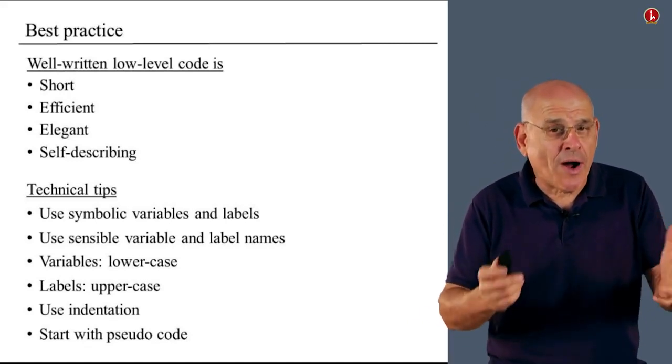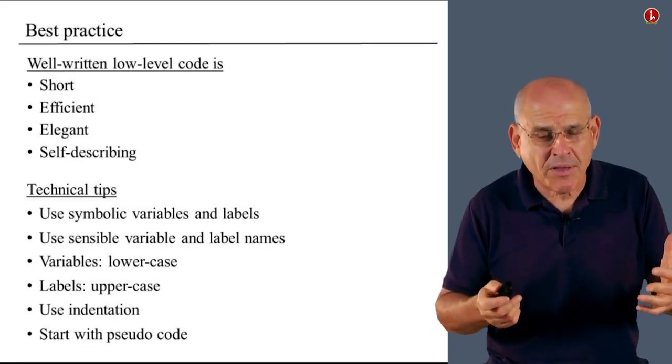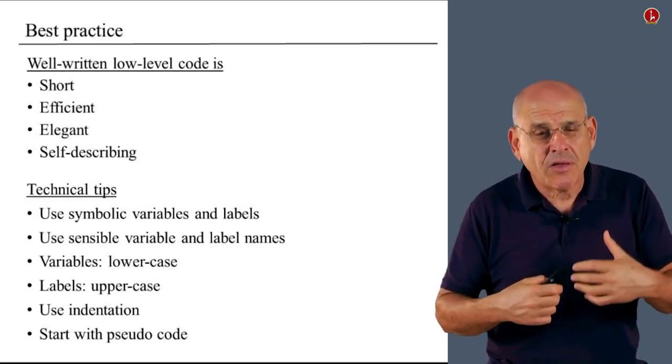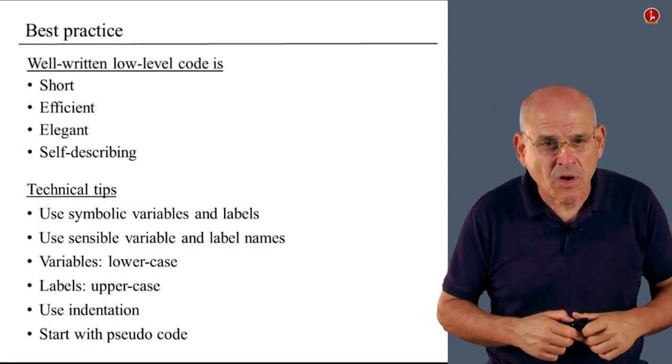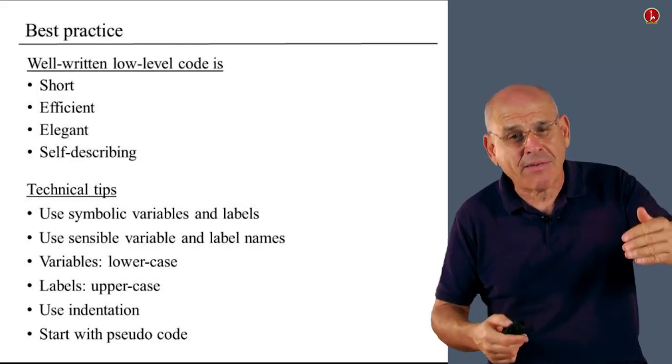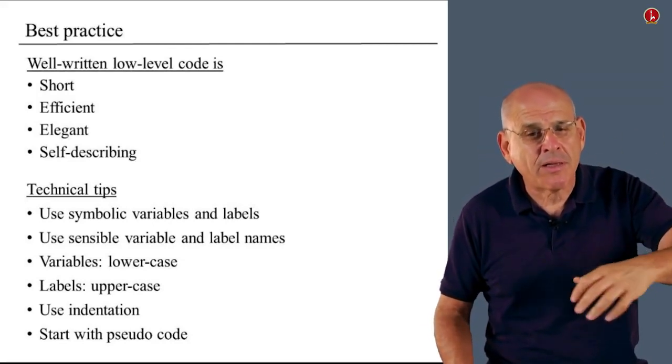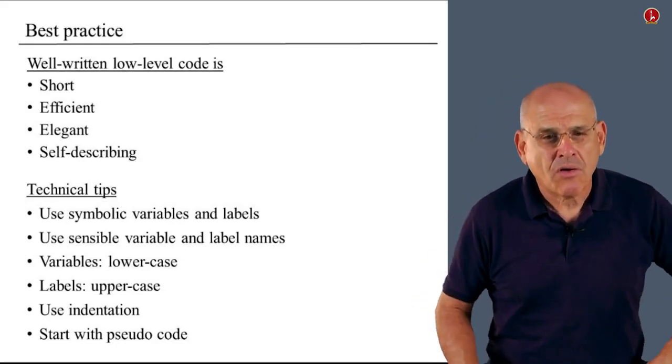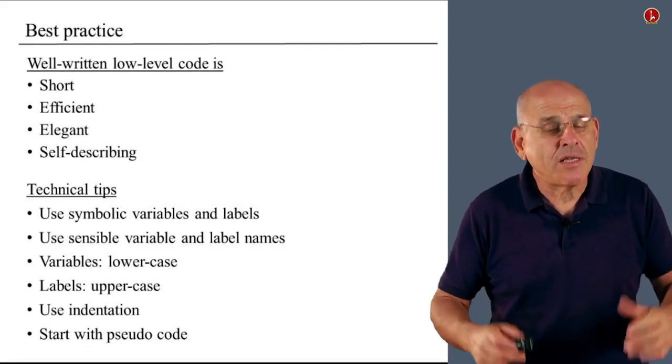If you follow this convention, which is not required by the way, it's not something that the assembler cares about, but if you use this convention, you will have a very easy time for yourself to distinguish between variables and labels. So when you see an at command, an a command, when we see something like at sum, if the sum is lowercase, you know it's a variable. If it's an uppercase, you know that we mean to go to a label called sum. And finally, use indentation.